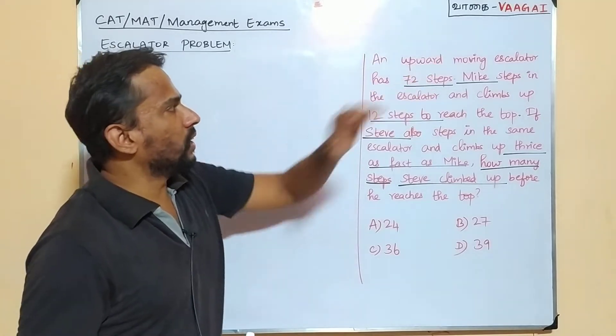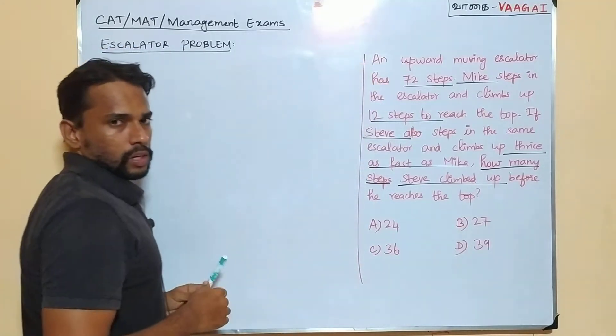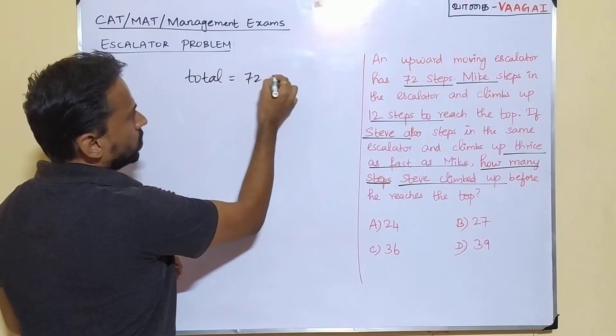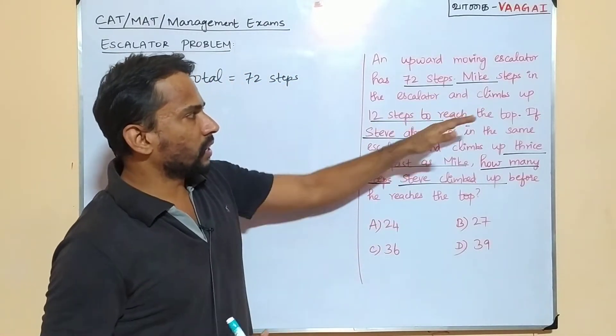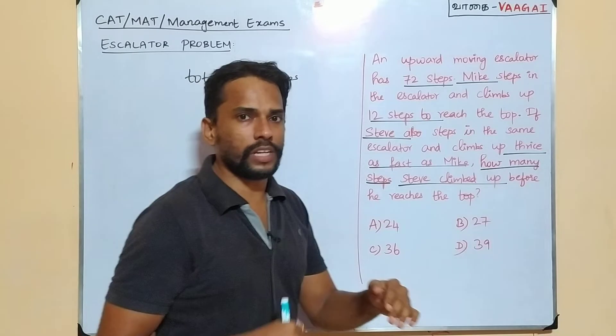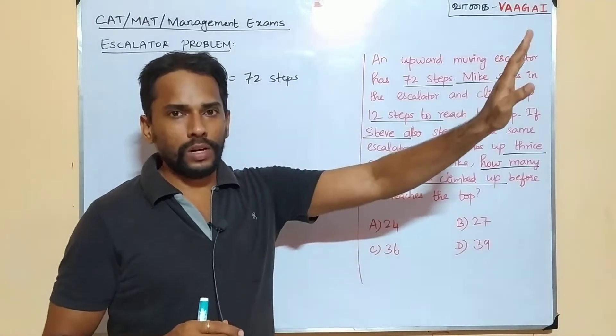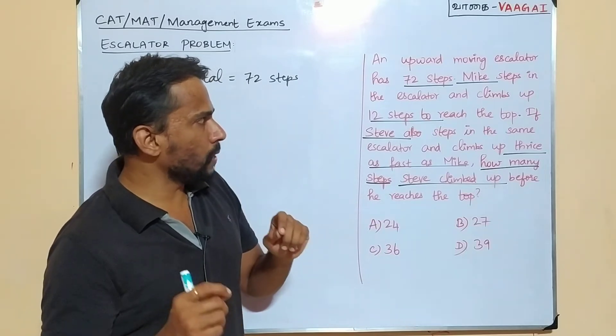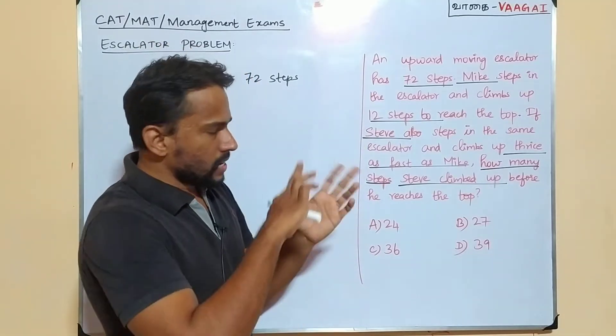Let's see what question we have here. An upward moving escalator has 72 steps. So there is an escalator, it is moving upwards and there are totally 72 steps there. So total 72 steps. Let's note it 72 steps. Let's continue. Mike steps in the escalator and climbs up 12 steps to reach the top.